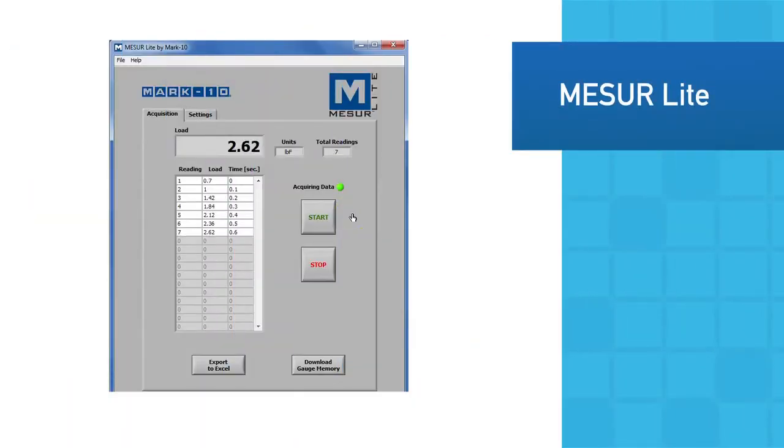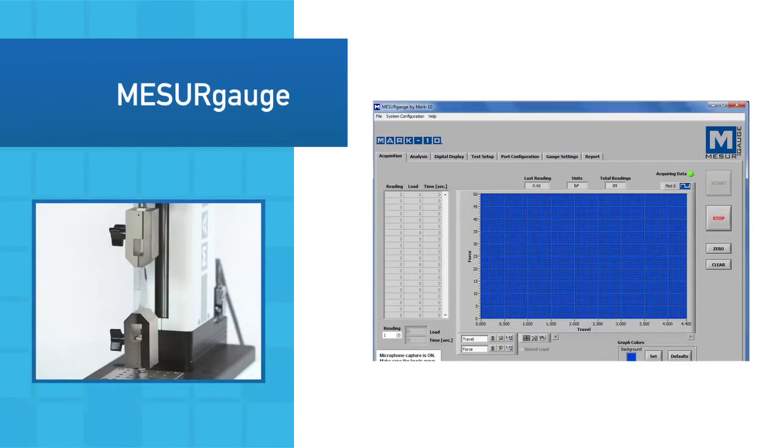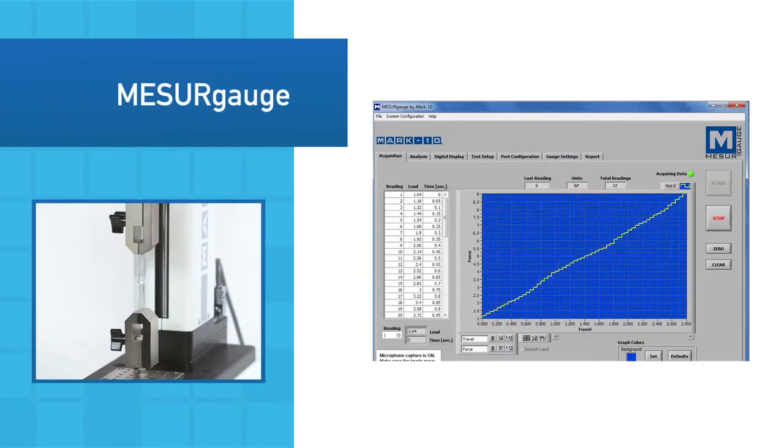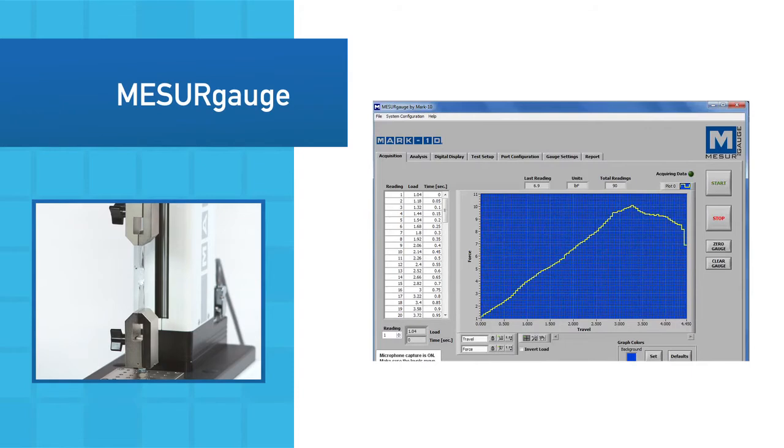The included MeasureLite data collection software tabulates data and allows for export to Excel. The more advanced measure gauge graphs data, calculates statistics, generates reports, and performs other functions.